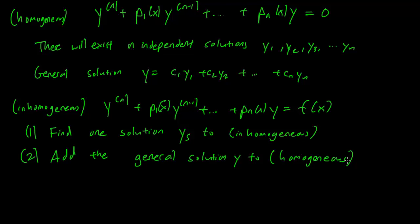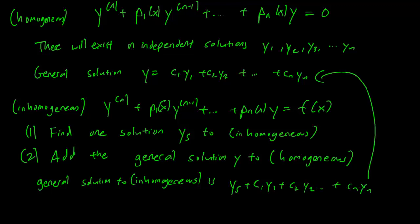In other words, the general solution to the inhomogeneous equation is going to be ys plus c1 y1 plus c2 y2 plus cn yn. And this is going to be our general solution.